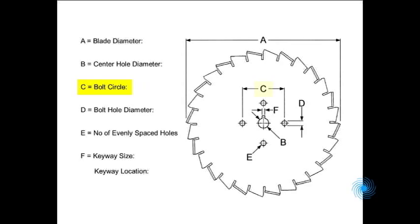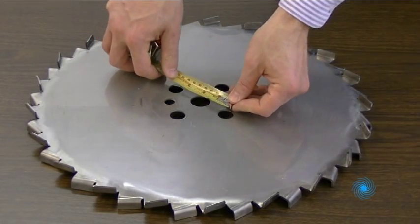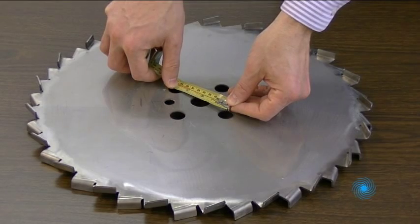Dimension C is the bolt circle on which a pattern of holes is located. Be certain to specify the bolt circle from center to center.